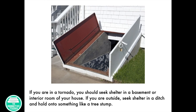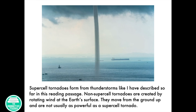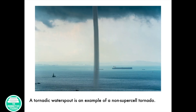If you are in a tornado, you should seek shelter in a basement or interior room of your house. If you're outside, seek shelter in a ditch and hold on to something like a tree stump. Supercell tornadoes form from thunderstorms like described so far in this reading passage. Non-supercell tornadoes are created by rotating wind at the Earth's surface. They move from the ground up and are not usually as powerful as a supercell tornado. A tornadic waterspout is an example of a non-supercell tornado.